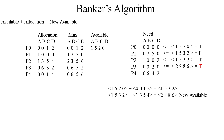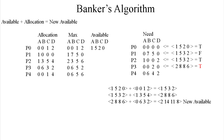We move 2, 8, 8, 6 down and grab 0, 6, 3, 2 from P3 of the allocation matrix and add them together, giving us 2, 14, 11, 8 as our current new available. Then we take 2, 14, 11, 8 and check if P4's need of 0, 6, 4, 2 is less than or equal to 2, 14, 11, 8 — and that also evaluates to true.